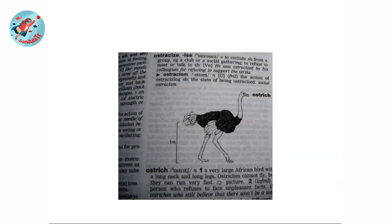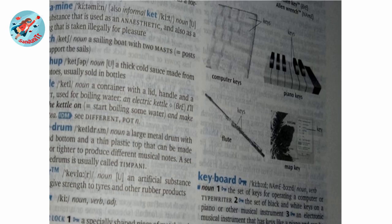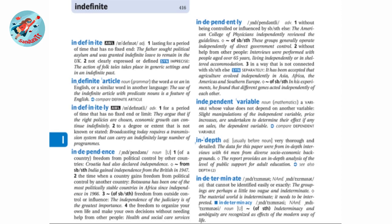In addition, dictionary pages may include illustrations — pictures. For example, there may be an illustration of an ostrich, or computer keys, piano keys, a flute, or a map key. Not every word on a dictionary page will have an illustration — only words with complex or visual meanings tend to have them.